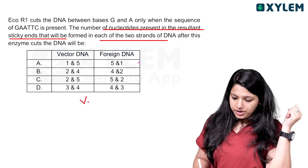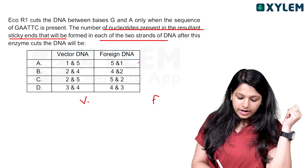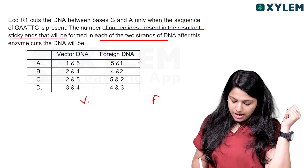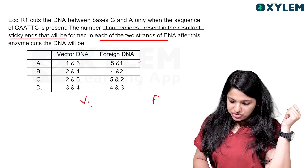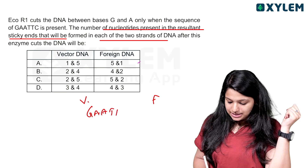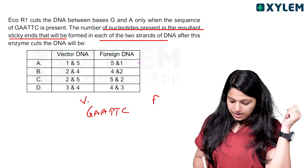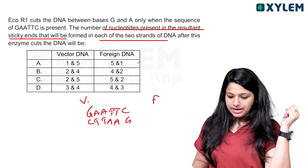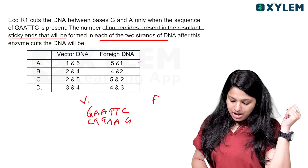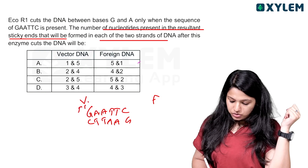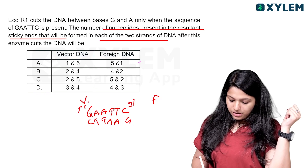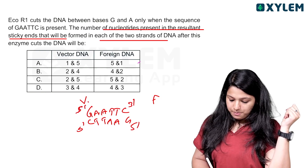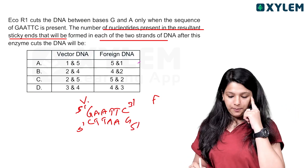Vector DNA has foreign DNA. The sequence GAATTC is shown on the 5' to 3' strand, and the complementary strand runs 3' to 5' in order.